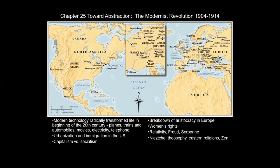Modern technology radically transformed life in the beginning of the 20th century: planes, trains, and automobiles, movies, electricity, telephone. A lot of these things made society move faster and made things change very quickly. You might imagine people at the time reacted to it — similar to how the internet and smartphones have changed things so quickly. Even if you're younger, you can think back to when you were 10 years old and how much things have changed. Similar sorts of changes, but even more radical in the beginning of the 20th century.